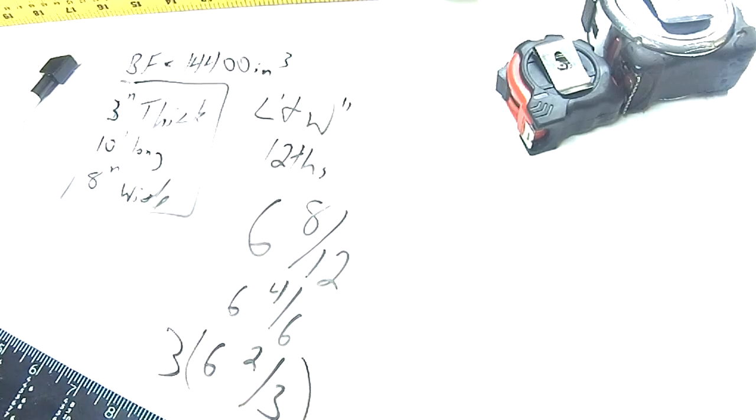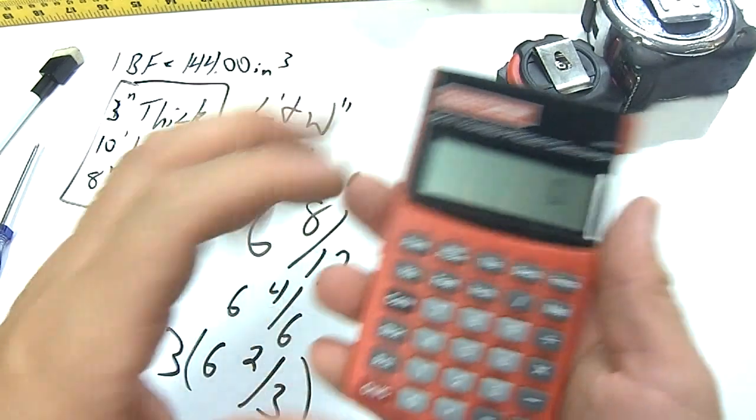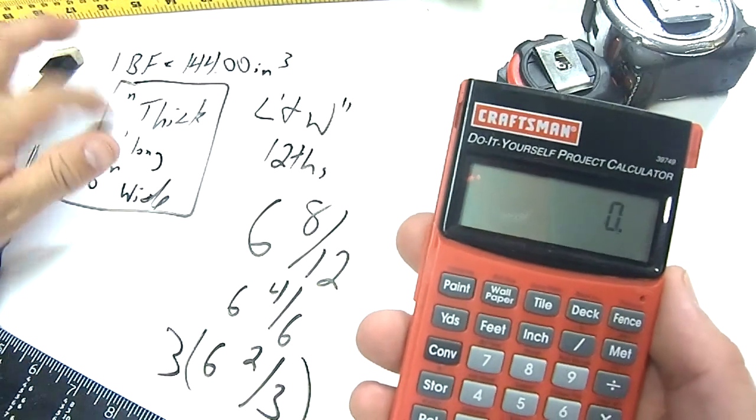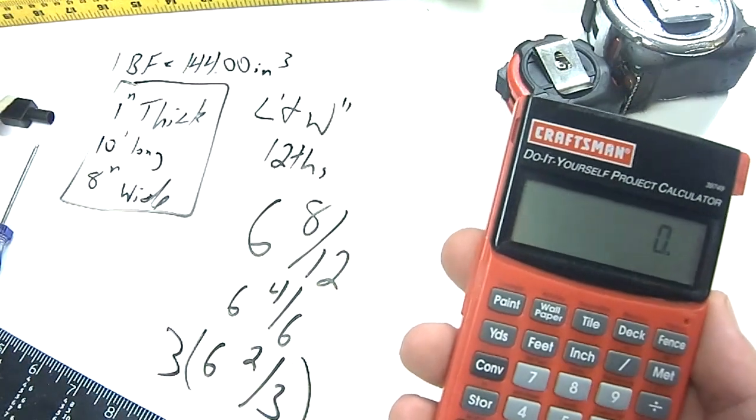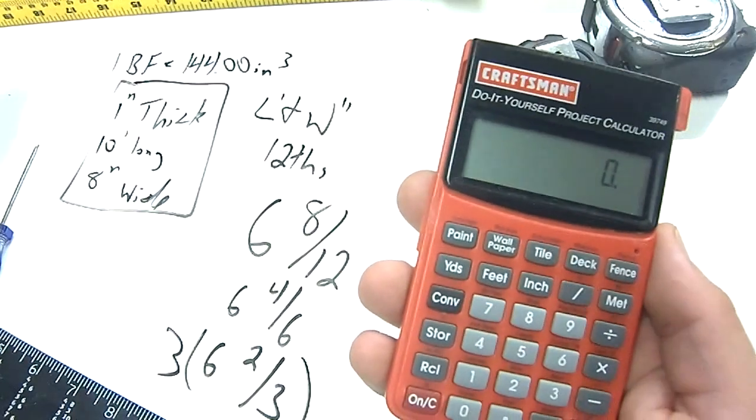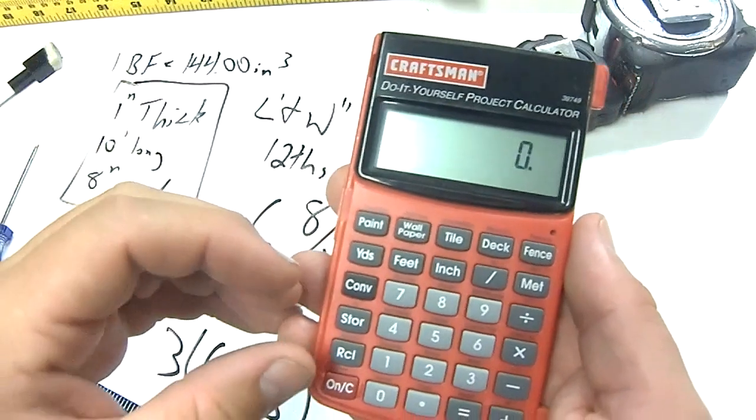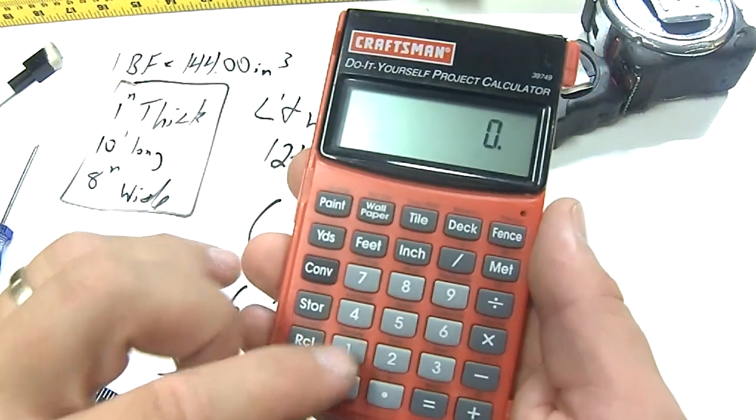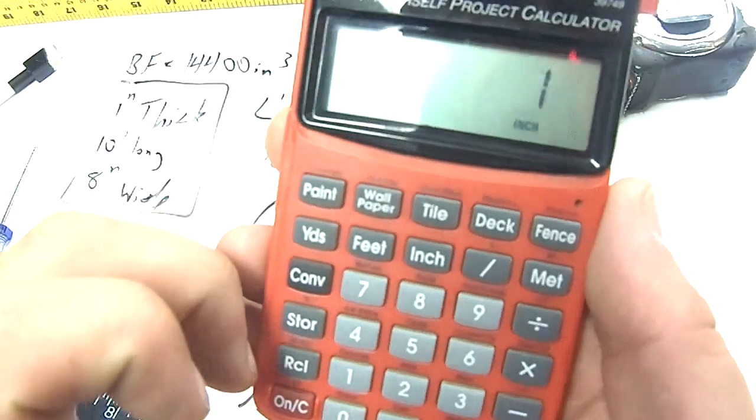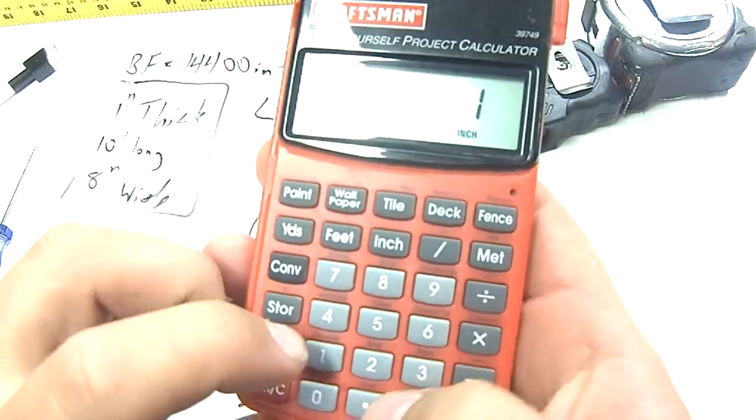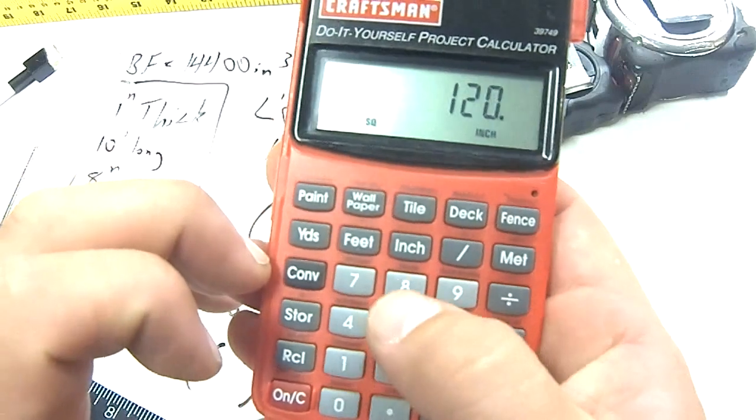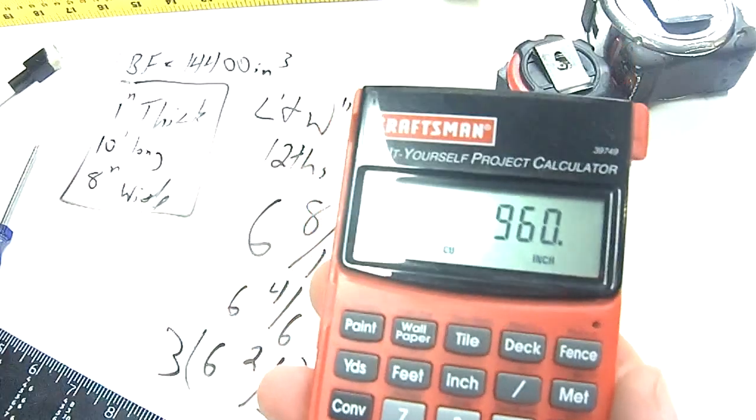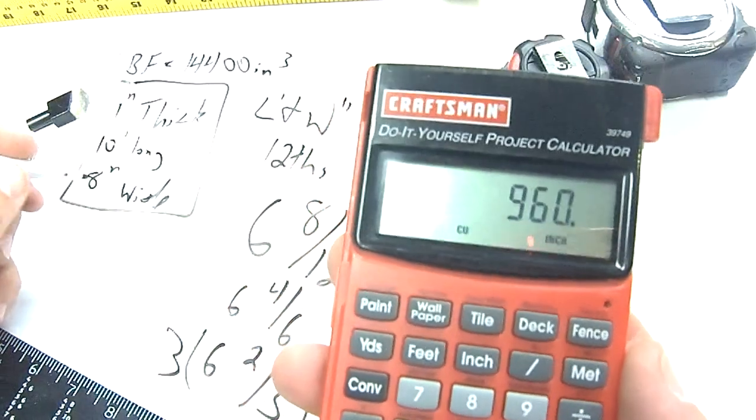Now, let me show you something else. The guys out there are high speed. You can also feed this out on the calculator. Now, this is a project calculator. These things are really, really handy to have, and you can literally enter the stuff in, and they'll do all the conversions for you. So we'll do 1-inch times 10 feet times 8 inches, and that will tell me that I have 960 cubic inches.